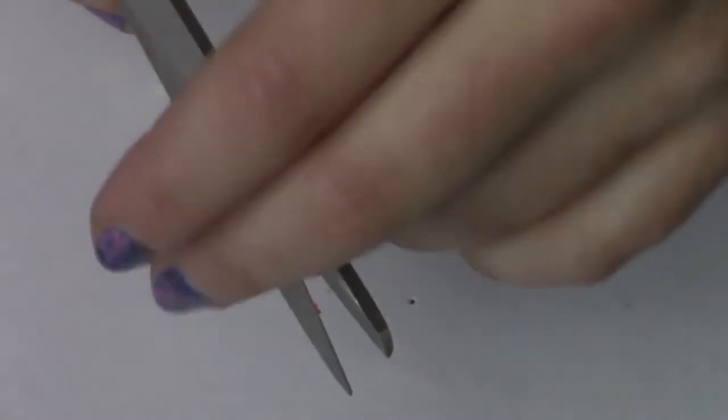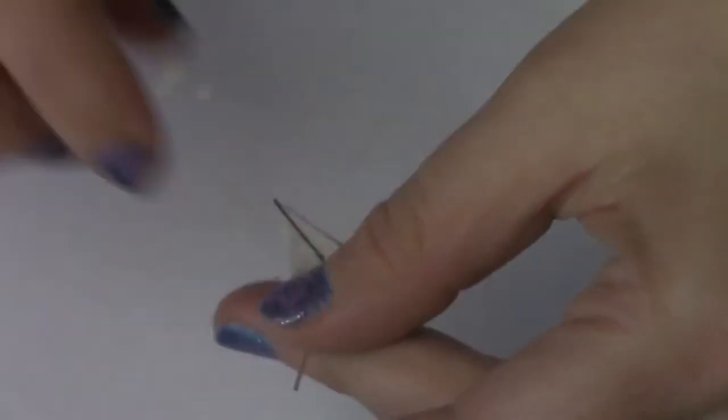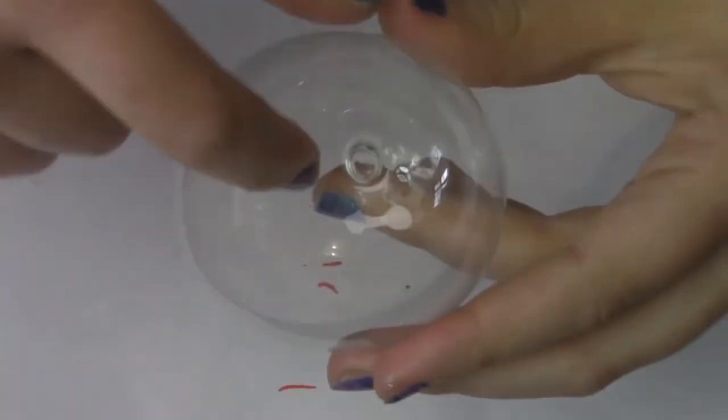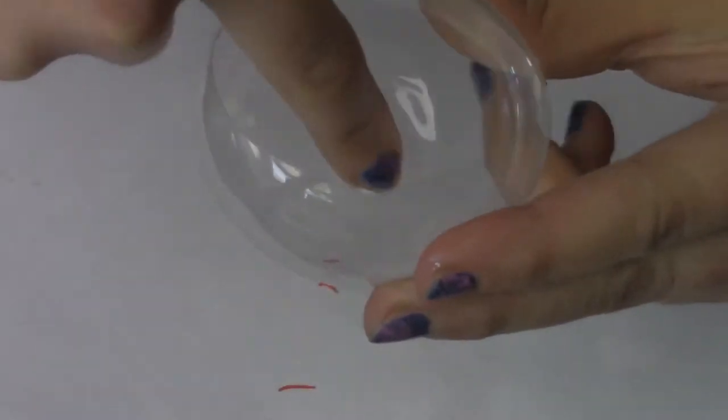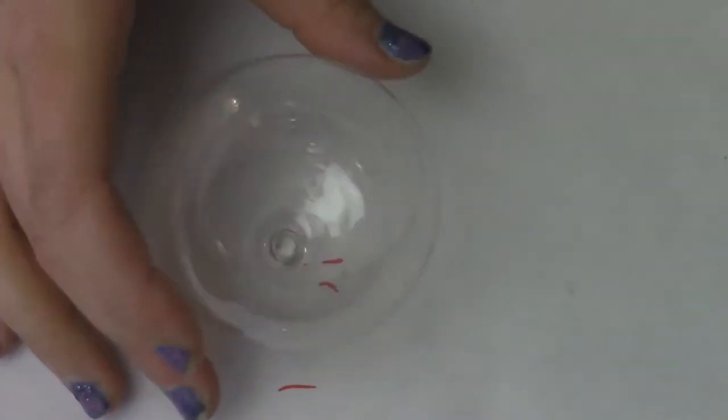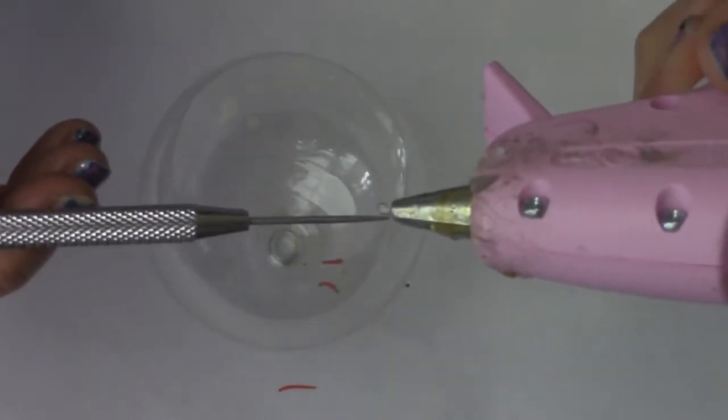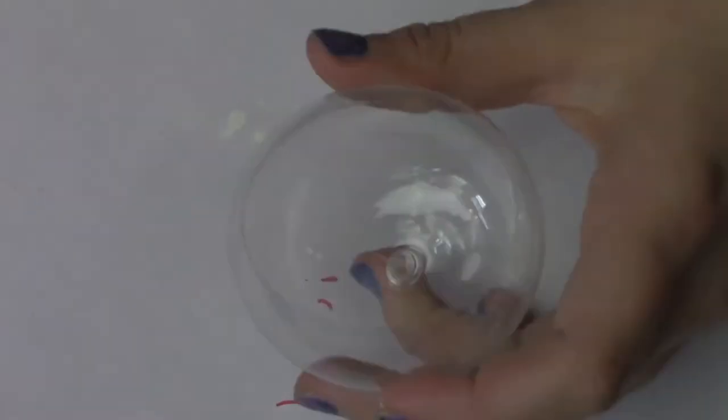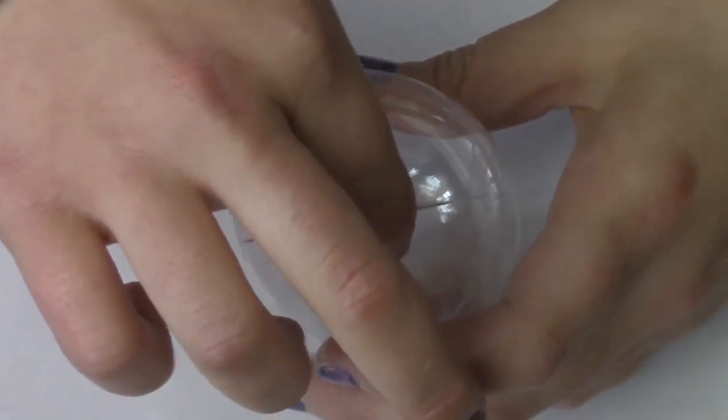If you're using an eye pin like me, you're going to have to cut it down so it's not so long in the dome shape that we made out of the Christmas ball. Now my plastic Christmas ball had this little tiny hole in the top that just kind of stuck out on the outside. So what I did was I filled that with hot glue and added my eye pin and held it there until the glue was dry.